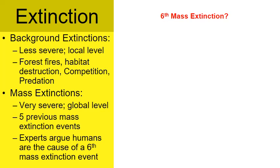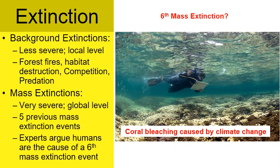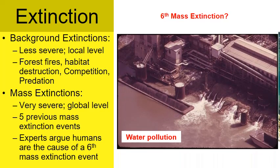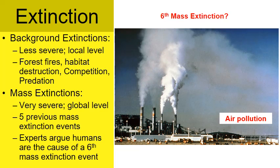Many experts argue that humans are the cause of a sixth mass extinction occurring right now. One of the leading reasons is deforestation and the destruction of natural habitats, which is causing life around the world to go extinct. Climate change affects coral reefs, causing bleaching. Water pollution and air pollution have all had an impact over the past few decades that has caused a lot of life to go extinct.